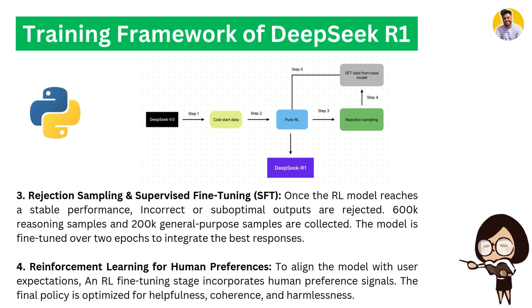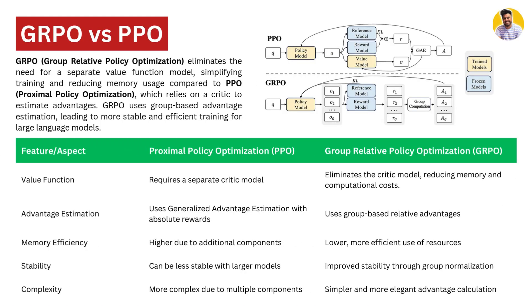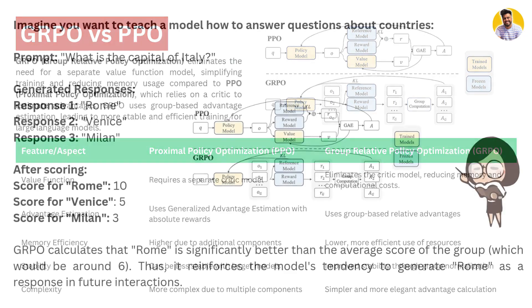GRPO — Group Relative Policy Optimization — eliminates the need for a separate value function model or critic model, simplifying training and reducing memory usage compared to Proximal Policy Optimization, which relies on a critic model to estimate the advantage. GRPO uses a group-based advantage rather than a single-token advantage.